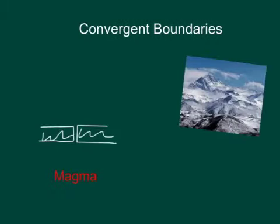Convergent boundaries. A convergent plate boundary is where two plates move towards each other. There are three types of convergent boundaries.